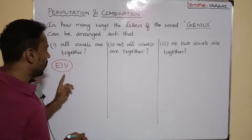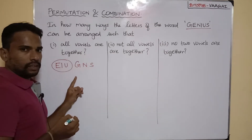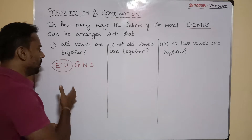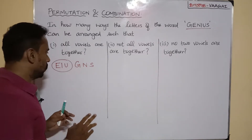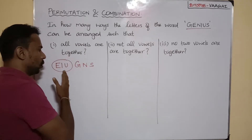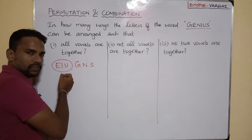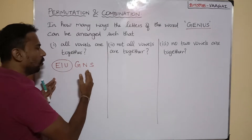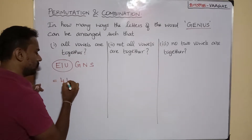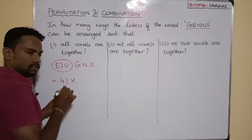The other letters are G, N, and S — three different letters. So now we need to arrange only four objects: the vowel group plus G, N, and S. We do not consider the vowel group as separate letters; it is one single object. So we are arranging four objects in total, which can be done in 4! ways.